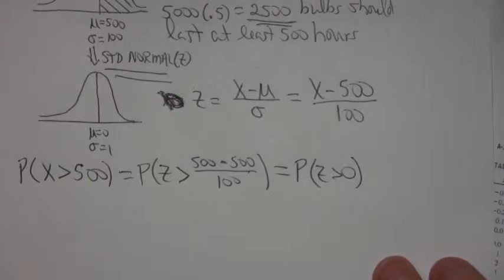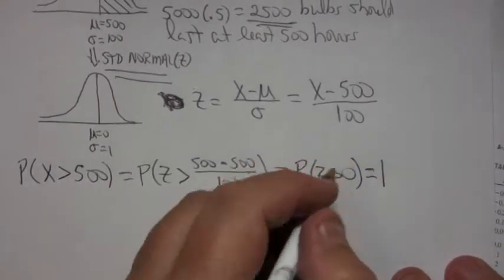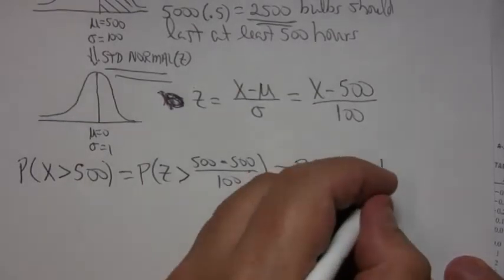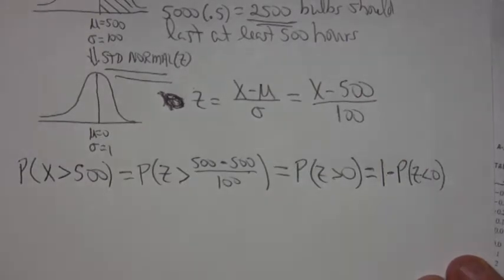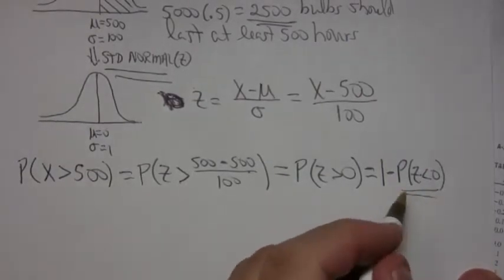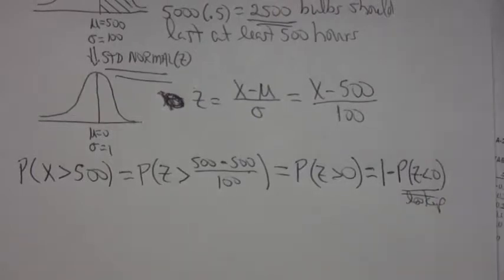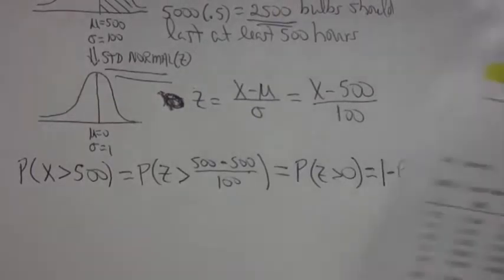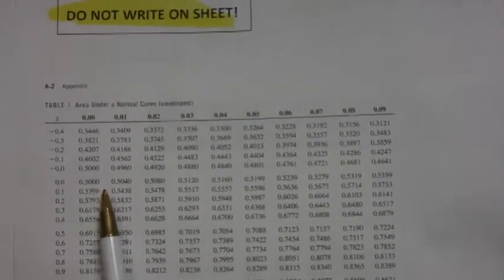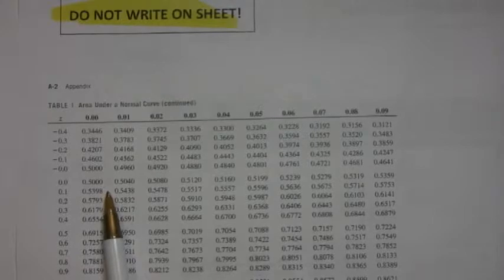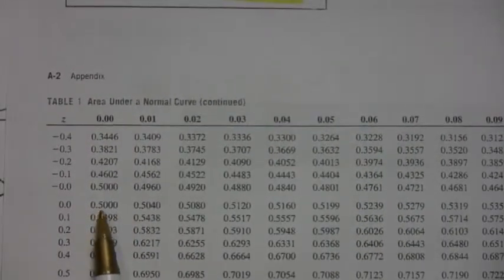But remember, you can't look up a number to the right in the table. You can only look up a number to the left, but what you know is that the probability that z is greater than something is 1 minus the probability that z is less than that same value. And that number you can look up in the table. And if you look up z equals 0 in the table, you end up with 0.5.